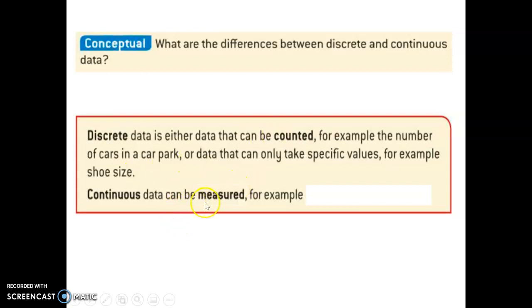Continuous data can be measured. For example, height, weight, time. That's the easiest way to think about continuous data. It can be measured. There's some measuring tool which will allow you to measure it. Height can be measured using a ruler or tape measure. Weight can be measured using a scale. Time can be measured using stopwatches or clocks. And all those can be measured to whatever degree of accuracy your tool allows you to measure to.